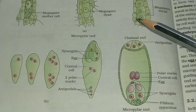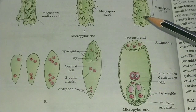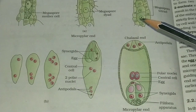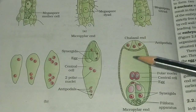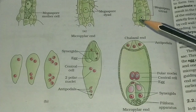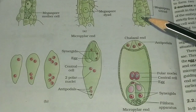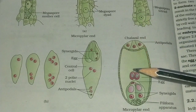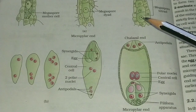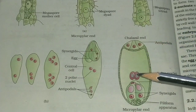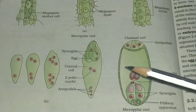It is called monosporic because only one mega spore helps in embryo sac formation. In some angiosperm plants, two mega spores help in embryo sac formation — that is called bisporic. In some plants three mega spores are involved — that is trisporic. Sometimes the number increases further, which is called multisporic development. So here we have seen that an embryo sac is formed from a mega spore, and that process is known as mega gametogenesis. I hope you enjoyed this video. Thank you. Have a nice day.